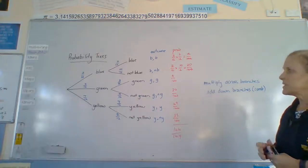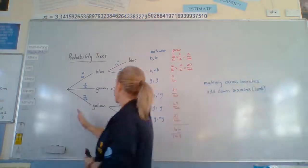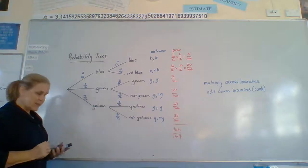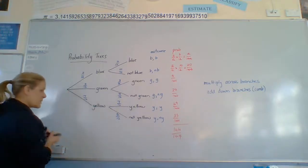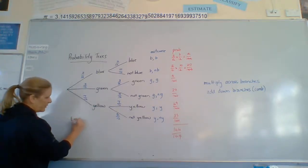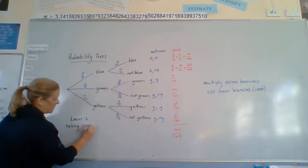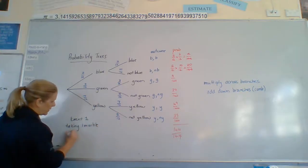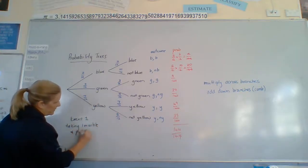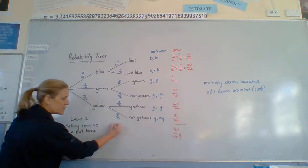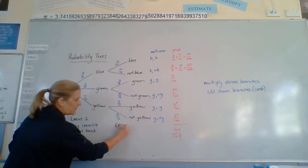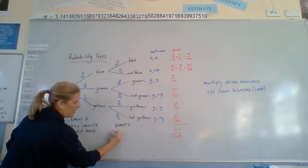That's when we're combining probabilities. So, each one of these is an event. It's something that's happening. This would be event 1, taking 1 marble and putting it back. This would be event 2, taking 1 marble.